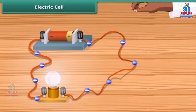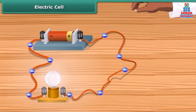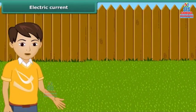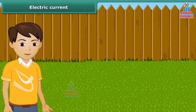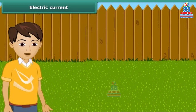A cell is a simple device in which chemical energy is changed into electric energy. Some materials allow electric current to pass through them, while others do not. The materials that allow electric current to pass through them are called conductors.